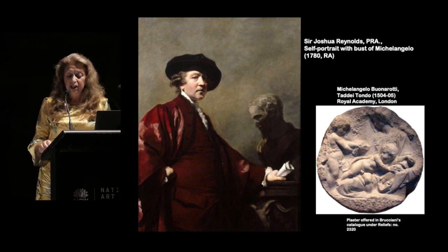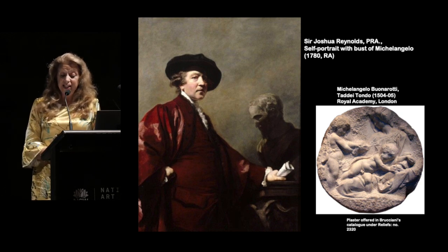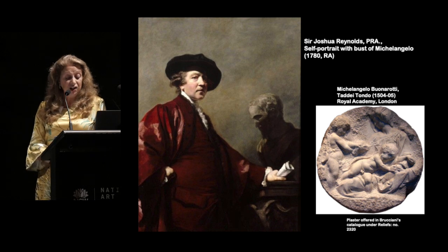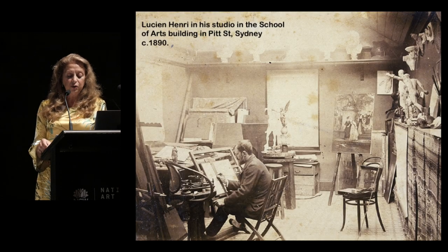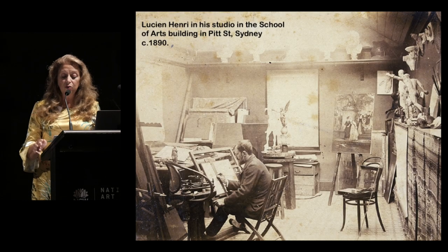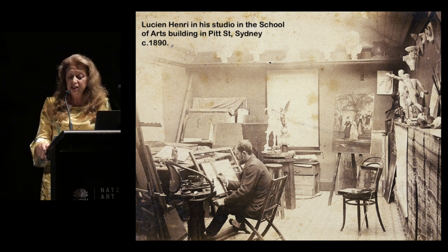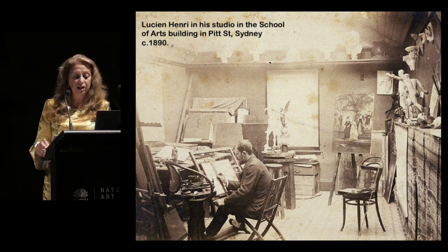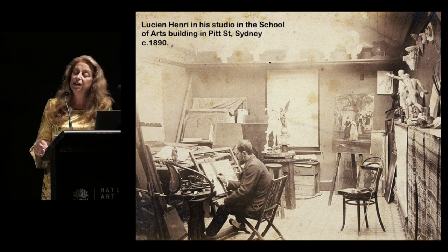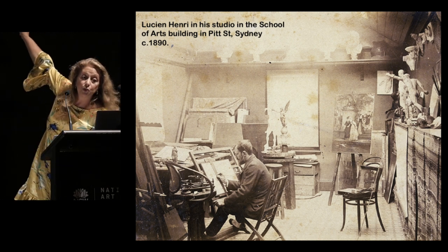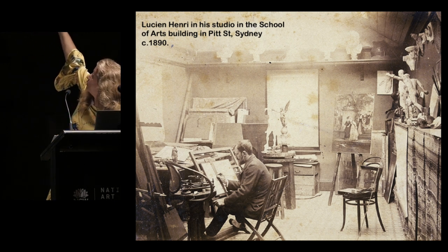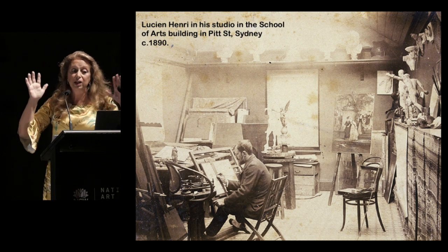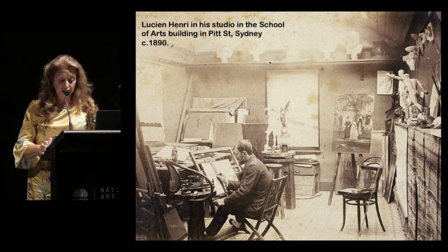Whilst early records are missing, certainly the registers of 1910 show that the school was in possession of the eyes, ears, mouth and nose of David, in both anatomical and faceted reproduction. We can surmise from a photo of Lucien Henri in his studio that the Department of Art must have been in possession of some of the casts by the early 1880s. If you look up onto the right-hand wall here, some of the relief casts — the first white one you come to — is actually the cast of the two ears from Michelangelo's David.